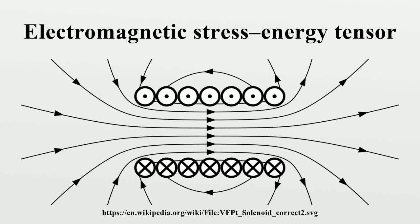In relativistic physics, the electromagnetic stress-energy tensor is the contribution to the stress-energy tensor due to the electromagnetic field. The stress-energy tensor describes the flow of energy and momentum in space-time. The electromagnetic stress-energy tensor contains the classical Maxwell stress-tensor that governs the electromagnetic interactions.